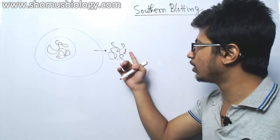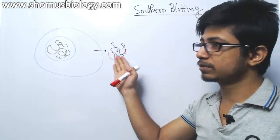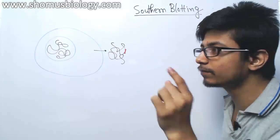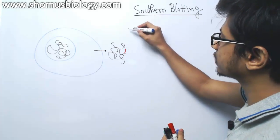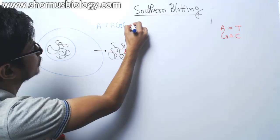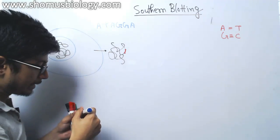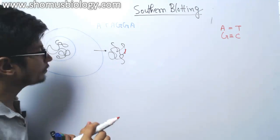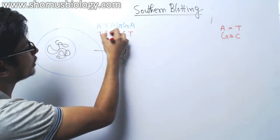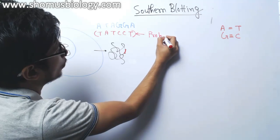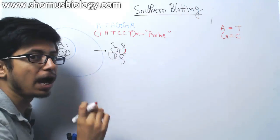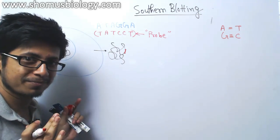We want to know whether this gene is present in this mixture of DNA or not. We know the sequence of this DNA, but we do not know whether the DNA is present in this mixture. To find that out, we can use a complementary target of this DNA. For example, if the sequence of our target DNA is ATTAGGA, then we know the sequence of this gene. What we will do is prepare a complementary of that strand — that will be TATCCT — and that will act as a probe. This probe can pair with the target DNA and we can find this portion of the DNA out from the rest of the mixture.